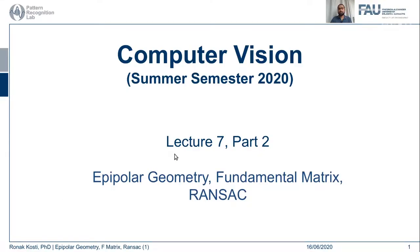Hello everyone and welcome back to the computer vision lecture series. This is lecture 7, part 2. In this part I want to focus on and explain the fundamental matrix and the essential matrix, including the geometric derivation of the fundamental matrix and the eight-point algorithm for computing it, along with some optimizations. In the next part we will talk about RANSAC and Hough transforms — some iterative optimization techniques for fitting algorithms.